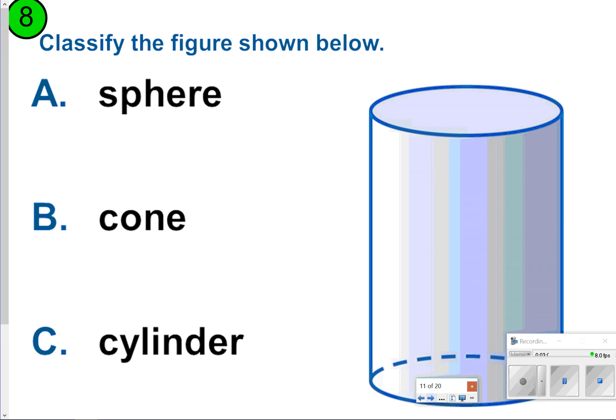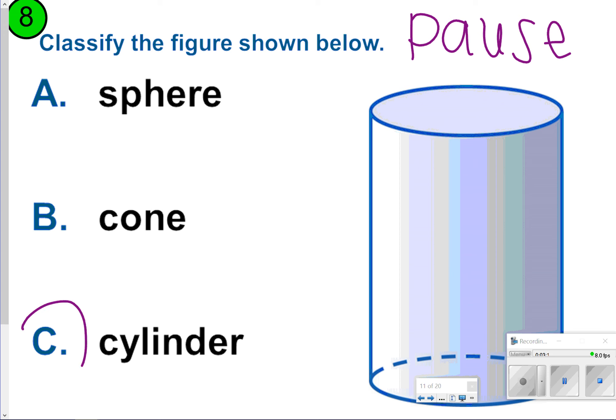Number eight, go ahead and pause this one. Choose A, B, or C, and then once you're done, click play. This one is going to be considered C, a cylinder.